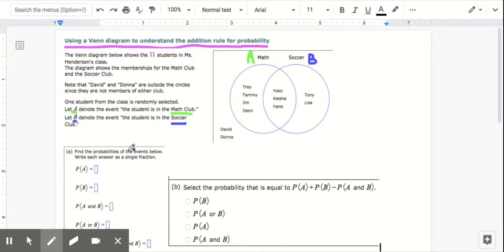We're going to find the probabilities of A, B, A and B, A or B, and then we're going to discover the rule for how you actually calculate the probability of A or B.